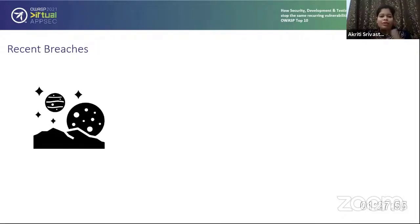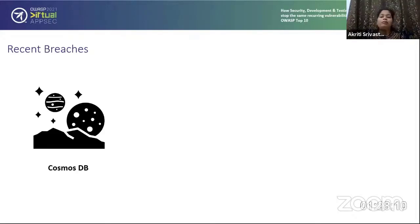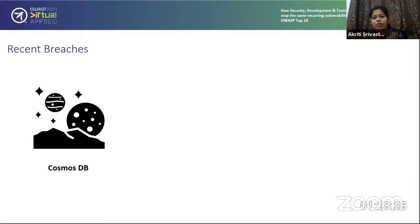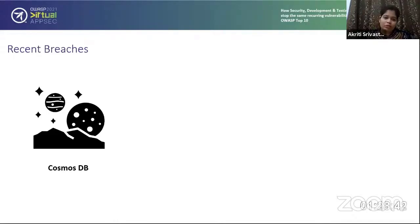First: any guess what this icon is? This is Cosmos DB, labeled as ChaosDB by WIZ, a research organization. The vulnerability found in Azure was that they were able to get the primary key as well as the storage token of different customers — essentially all customers. In some posts I've read, it was written that almost Fortune 500 companies were covered. This was done by a privilege escalation through their own Jupyter notebook, through which they were able to get into the Cosmos DB of other organizations.